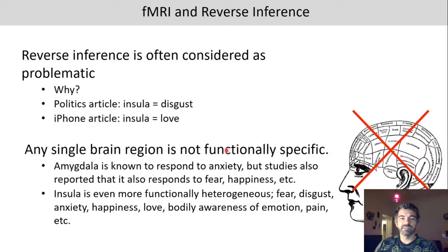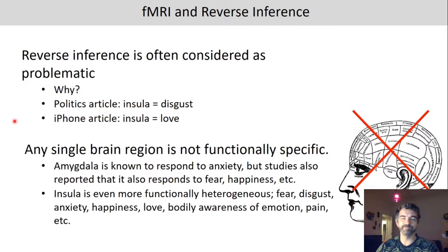This is not just true for the insula — it applies to many brain regions that are often not functionally specific. For example, the amygdala is known to respond to anxiety, but studies also report that it responds to fear, happiness, and other emotions. The insula is even more functionally heterogeneous: it responds to fear, disgust, anxiety, happiness, love, bodily awareness of emotion, and pain. So, not very specific.